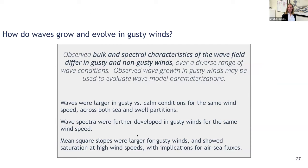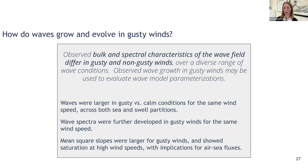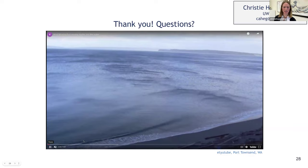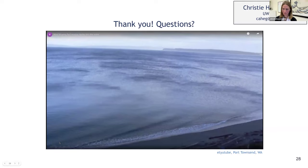To wrap up: the question we're asking is how do waves grow and evolve in gusty winds? We'd ultimately like to get to wave model parameterizations, but we're not quite there — this is really a work in progress. What we do see is that over a diverse range of conditions, a broad dataset, we still get differences in both the bulk and spectral characteristics of the wave field in gusty and not gusty winds. Hopefully we can dive into the growth rates in this dataset to evaluate some of the wave model parameterizations.